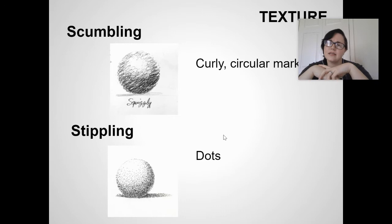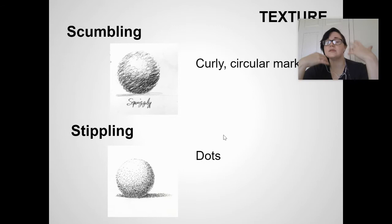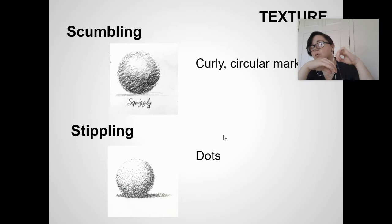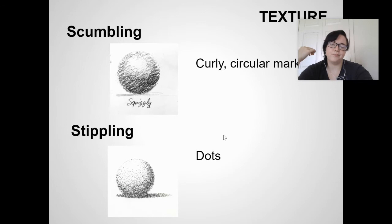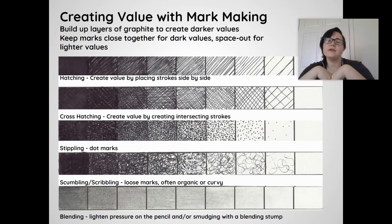To create texture, you can use scumbling — curly, circular marks — great for hair, bushes, or the illusion of vegetation. Next is stippling, creating a dot-like effect, great for textures like skin or the illusion of earth. Both techniques use stroke frequency to create the illusion of light versus dark. Notice how in the stippling sphere there are more dots at the bottom and fewer at the top. All of these techniques — hatching, cross-hatching, stippling, and scumbling — can be applied to a value scale.